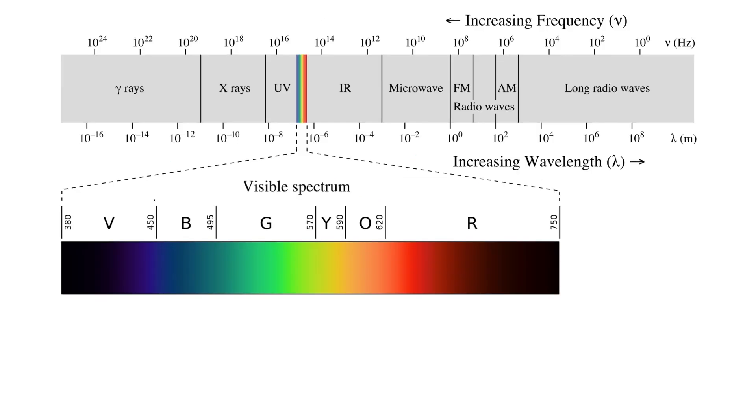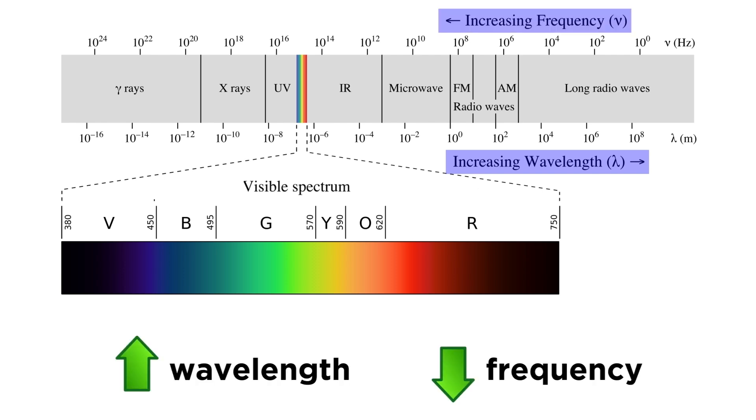Now returning to the electromagnetic spectrum, we can see that as wavelength changes, frequency will change in inverse fashion, so a greater wavelength means a lower frequency, while a shorter wavelength means a greater frequency, and consequently a greater energy.